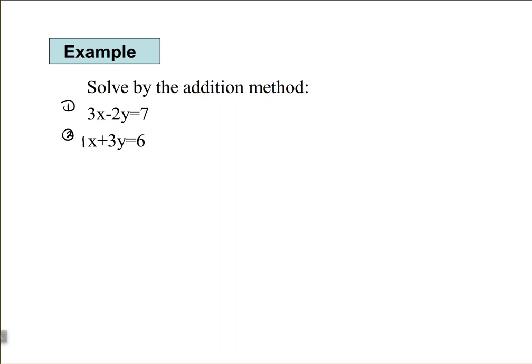But, if I want them to be opposite, then I want my second equation to have a negative 3x, and how do we get that by using multiplication? Well, we multiply by negative 3.